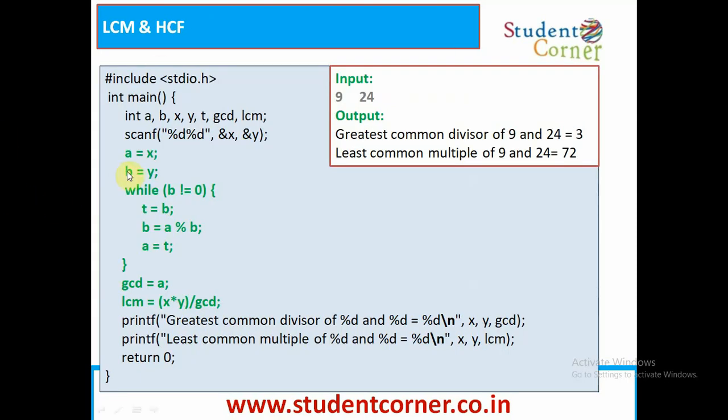Coming to the point, we need to take two values X and Y. Those are assigned to A and B. While B not equal to 0, T is equal to B, means temporary variable is equal to B. Then, B is equal to A mod B. A is equal to T. And finally, what is the value we are getting in A is the GCD. This is highest common factor. After getting GCD, using the formula, product of two numbers is equal to LCM into HCF. So, LCM is equal to product of two numbers by GCD. We are printing those two values.